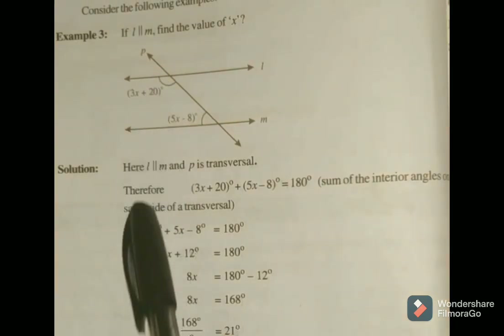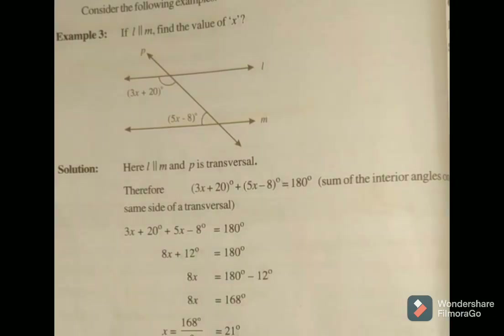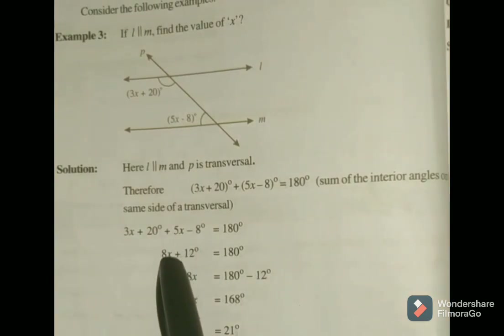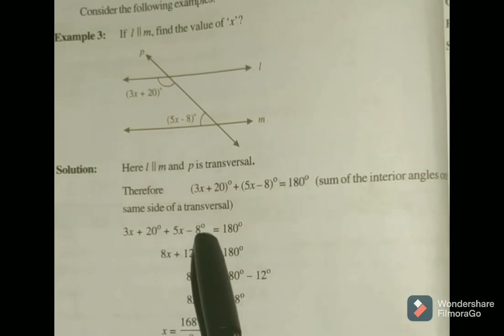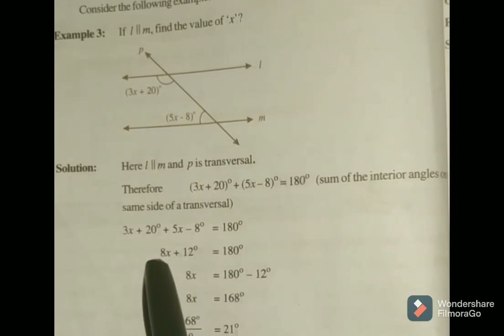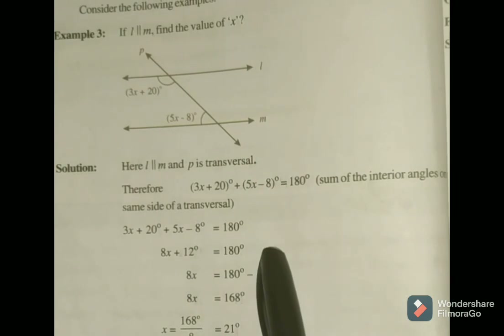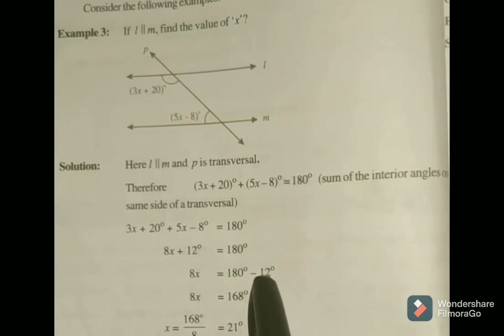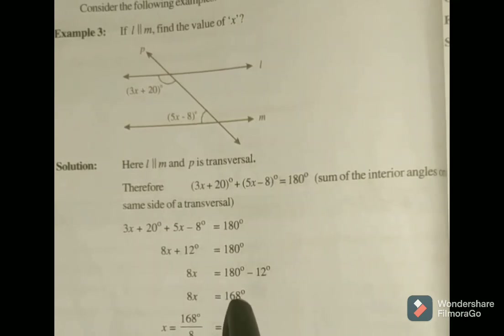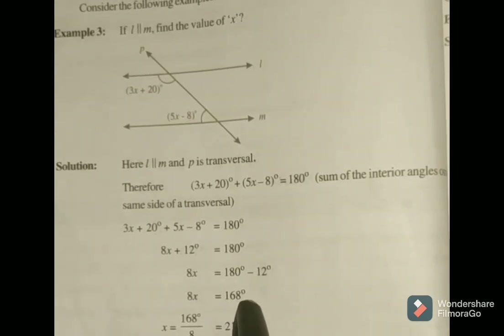We know the sum of interior angles on the same side of the transversal is 180 degrees. So, 3X plus 20 plus 5X minus 8 is equal to 180 degrees. In LHS, 3X plus 5X gives 8X, and 20 minus 8 gives 12, so 8X plus 12 is equal to 180 degrees. Therefore, 8X is equal to 180 minus 12, which is 168 degrees.